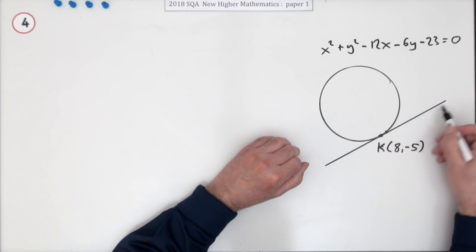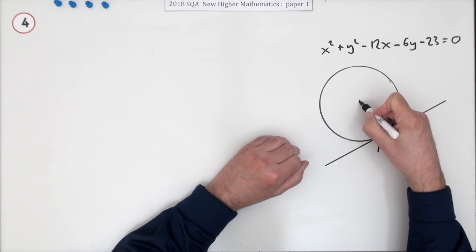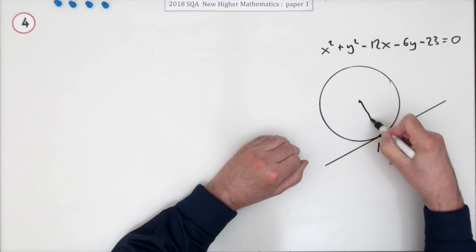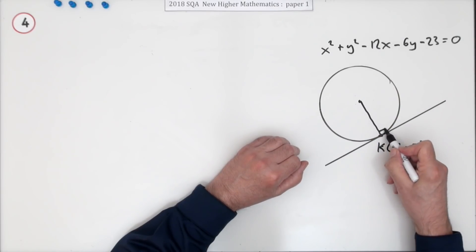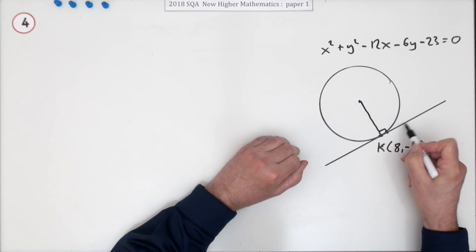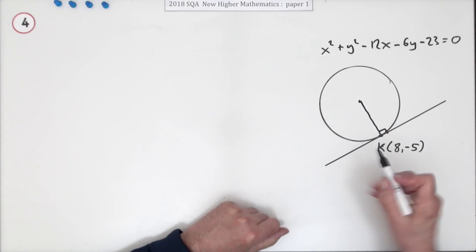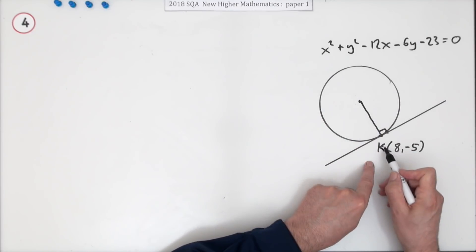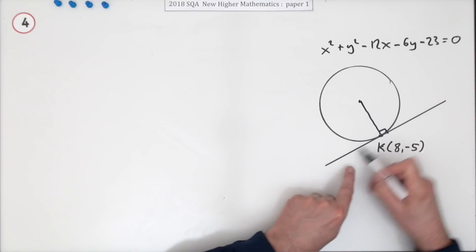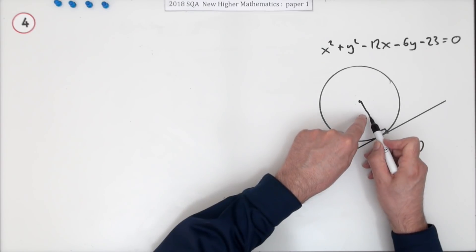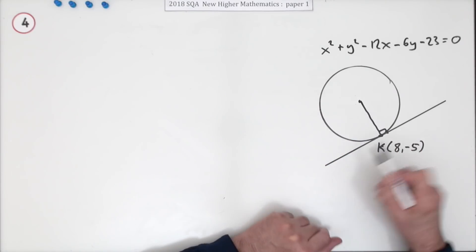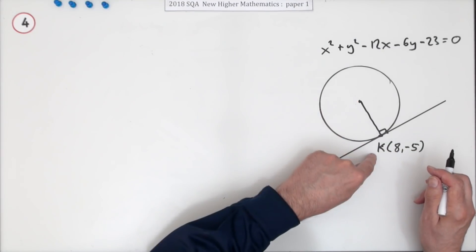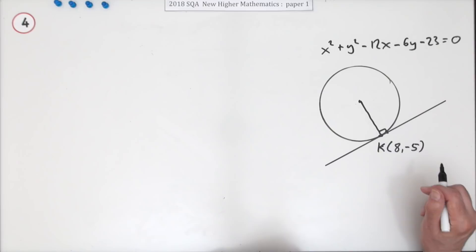Since you want the equation of a line, you need two things: a point on it—you've got it—and its gradient. You can get the gradient by reference to the gradient of the radius, because you can get the gradient of the radius because you know the center and you know the point K. You know two points on the line, so the first thing would be: what's the center of that circle?